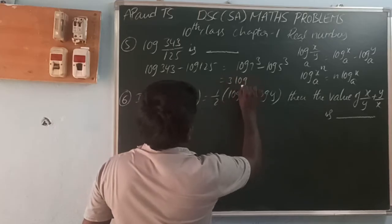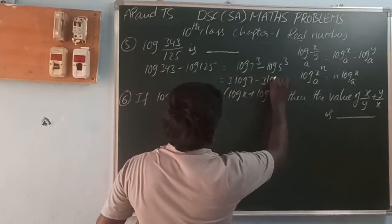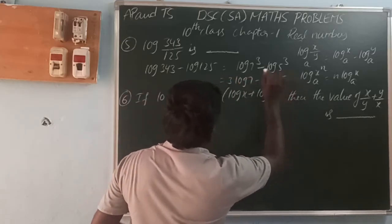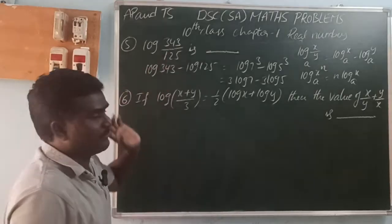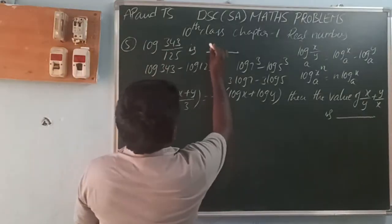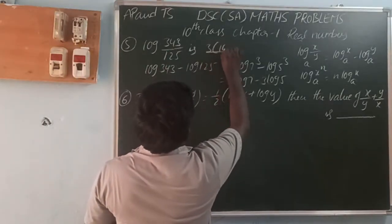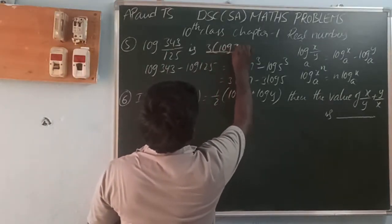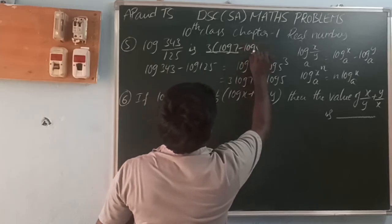The expanded form of this expression is 3 log 7 minus 3 log 5. This is the expanded logarithmic form. The answer is 3 times (log 7 minus log 5).